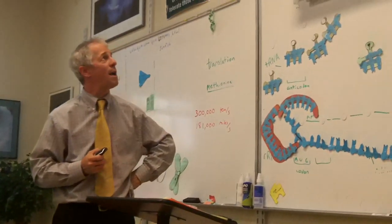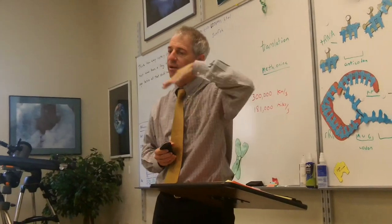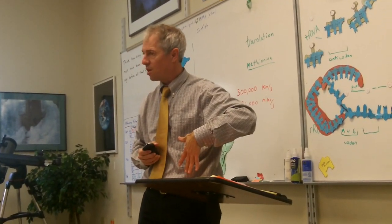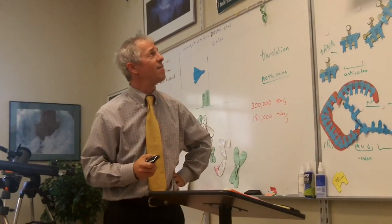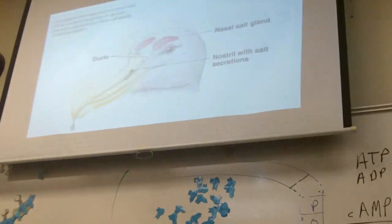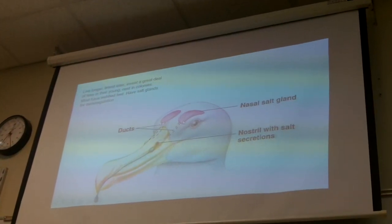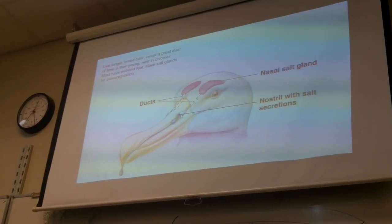Most seabirds have webbed feet, have webbing between their digits. It helps them push themselves along in the ocean, in the water. They also have salt glands. So the salt glands are usually located here above the eyes. And the salt glands will squirt salt, and it often comes out of their little nostrils.